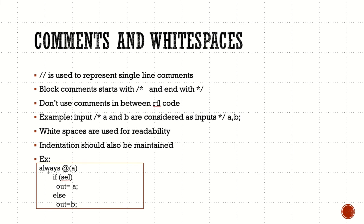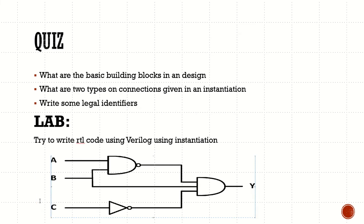White spaces can be used for readability through indentation. For example, inside an always block, if all statements start at the same column it is hard to read. By maintaining indentation — such as two spaces before an if statement — we show that the if statement is inside the always block, and further statements are inside the if block. White spaces are used for such purposes.